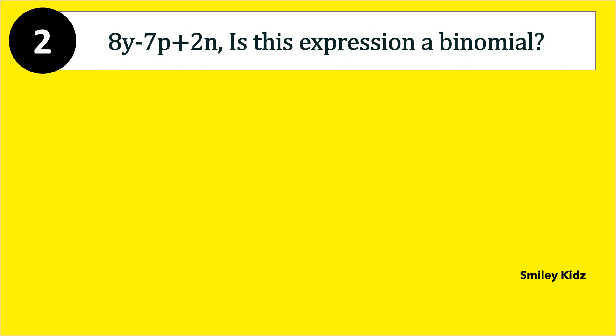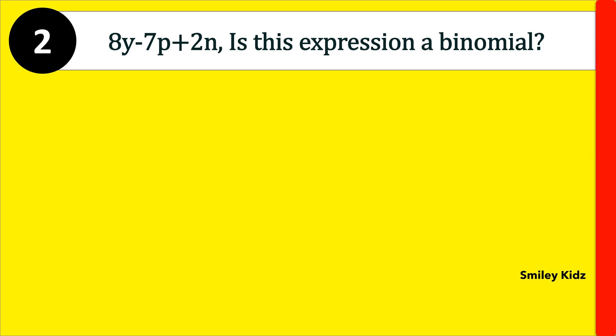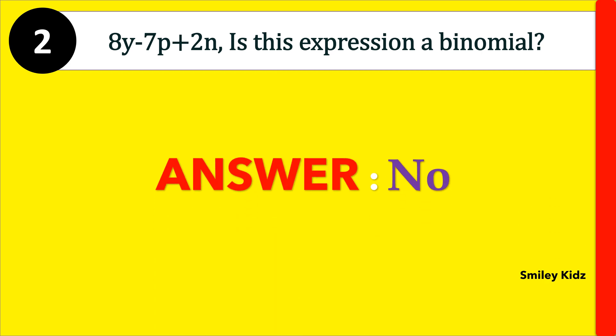Moving to question number 2. 8y minus 7p plus 2n — is this expression a binomial? The right answer is no. This expression is not a binomial because there are 3 terms. An algebraic expression with 3 terms is called a trinomial. An algebraic expression with 2 terms is called a binomial. Hence, the answer is no.